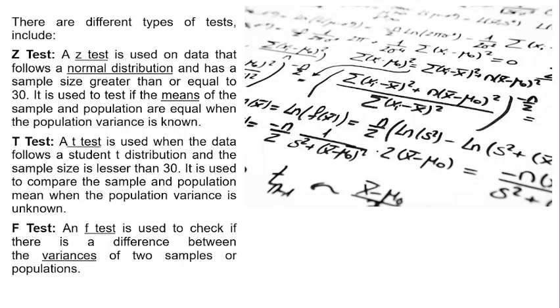The Z test is used on data that follows a normal distribution and has a sample size greater than or equal to 30. It is used to test if the means of the sample and population are equal when the population variance is known.